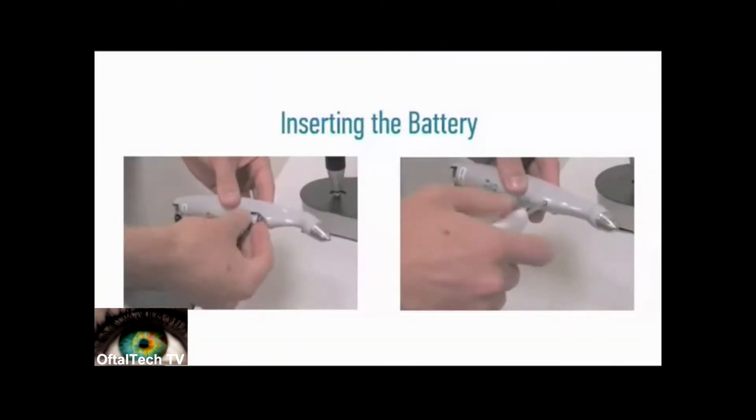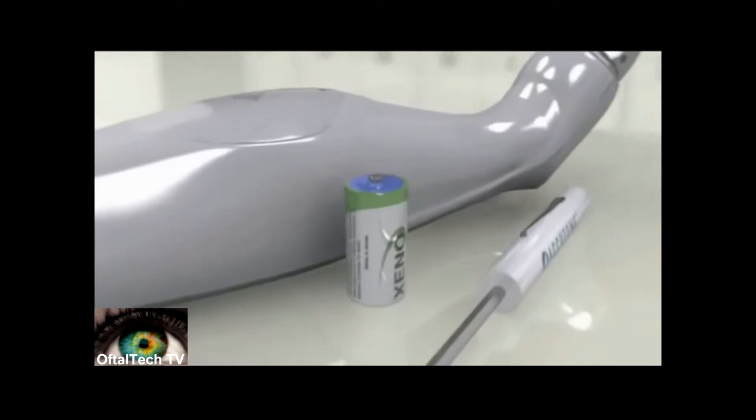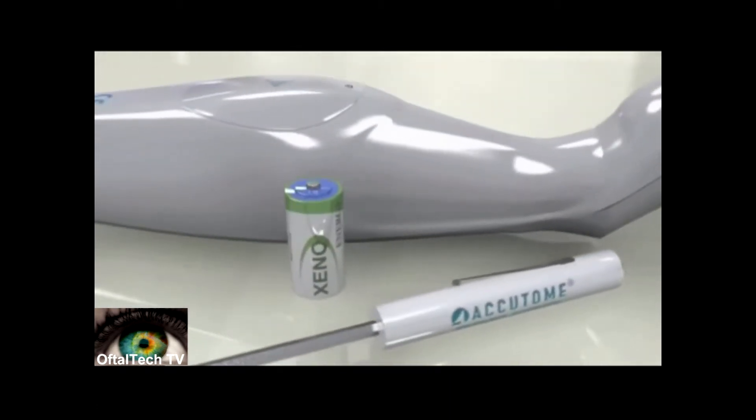Inserting the Battery. When you first unpack your AccuPen, the 3.6V lithium battery must be placed inside the unit.